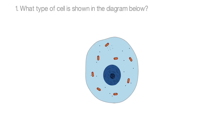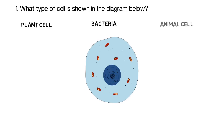Question one: what type of cell is shown in the diagram below? Is it a plant cell, a bacterial cell, or an animal cell?